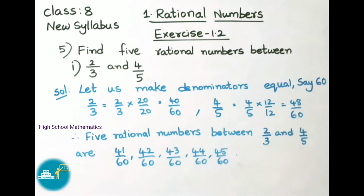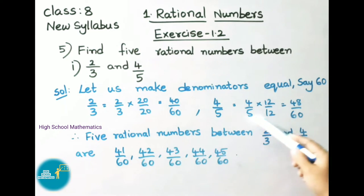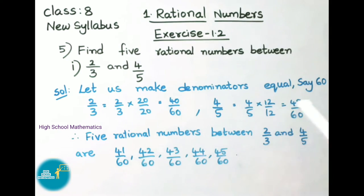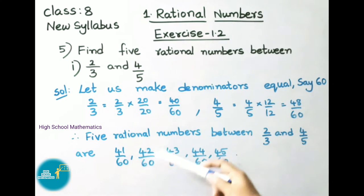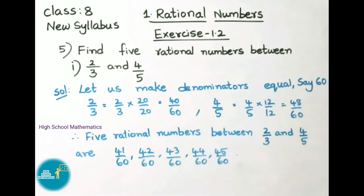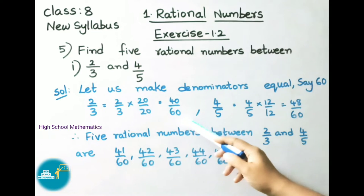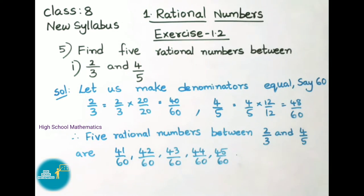Next, 4/5. Here denominator is 5. For 5, by what number if you multiply do we get 60? That is 12. So we are going to multiply and divide by 12. 4 × 12 = 48, denominator 5 × 12 = 60. So 4/5 we have converted into 48/60. Now we shall write 5 rational numbers between these two. Therefore 5 rational numbers between 2/3 and 4/5 are: 41/60, 42/60, 43/60, 44/60, and 45/60. The numbers between 40/60 and 48/60 — we can take any 5 rational numbers, so here we have taken these 5 numbers.